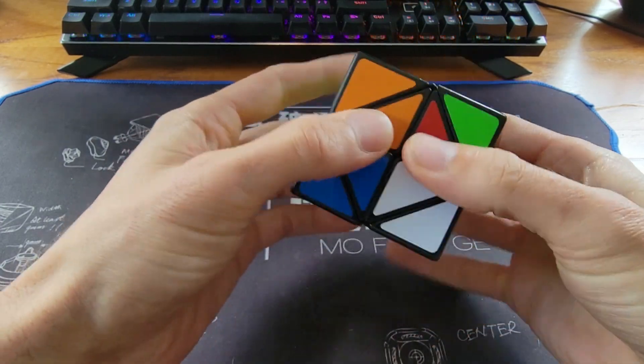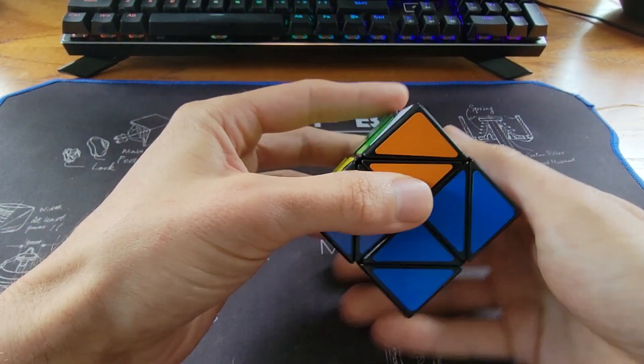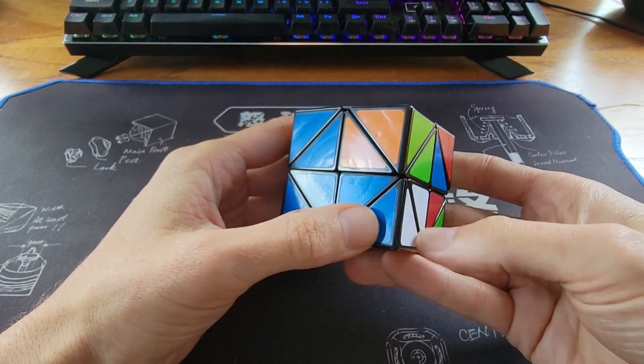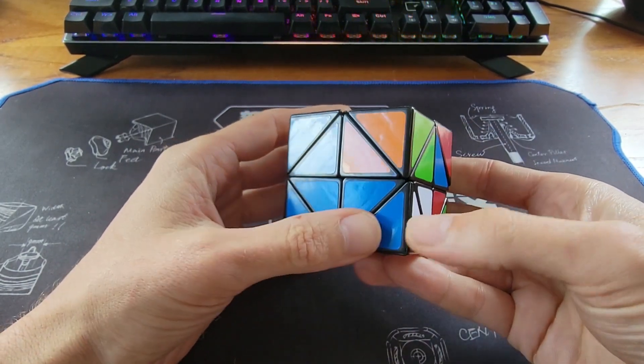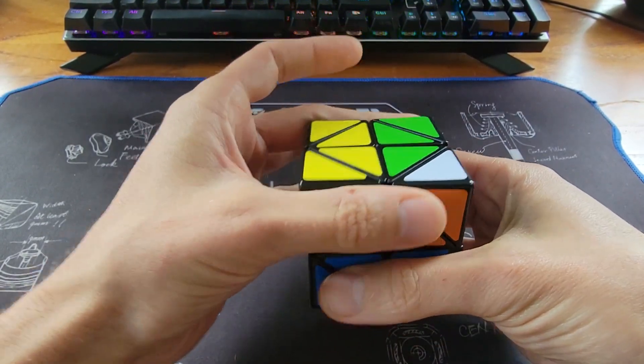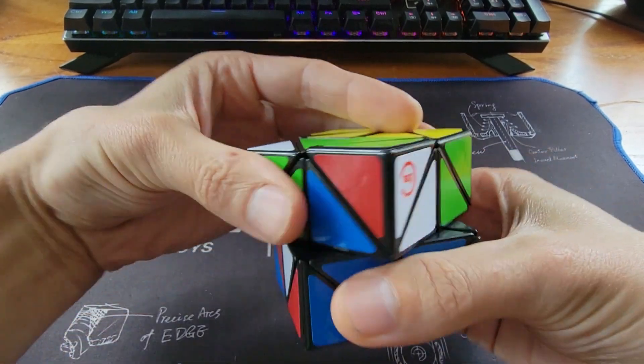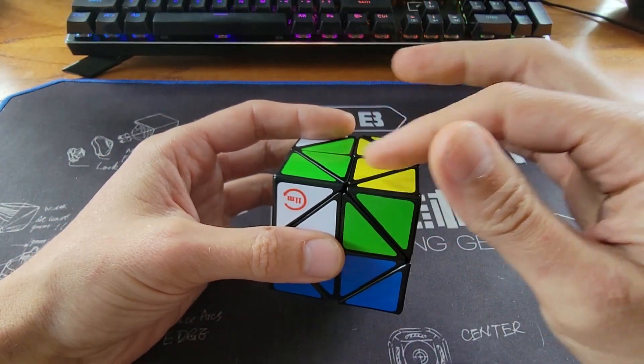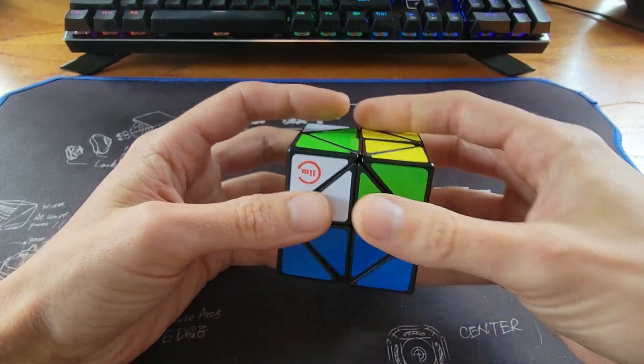And if you look at the bottom here, this is not how it was before. And it's important that it is exactly the way it was before we started this. So we're going to turn this twice. Because what we're going to do now is we're going to orient this and then we're going to undo that 2u move we just did.